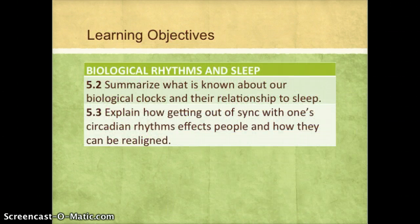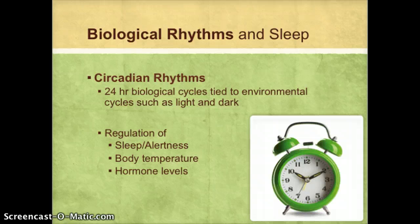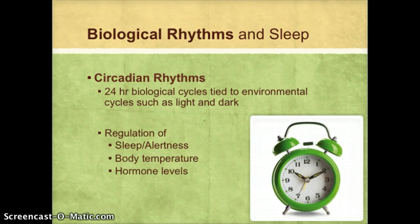We want to look at how biological rhythms affect our states of consciousness, including sleep. The biological rhythm we focus on related to sleep is the circadian rhythm — a roughly 24-hour biological cycle tied to the environmental cycles of light and dark, or night and day. We find that this circadian rhythm regulates our sleepiness and alertness, and it also affects our body temperature and hormone levels.